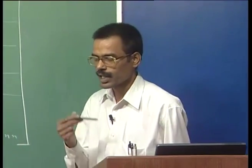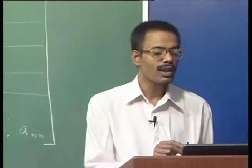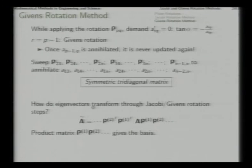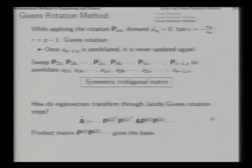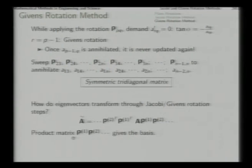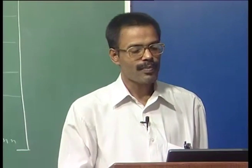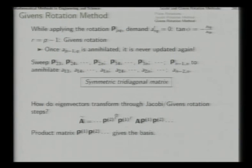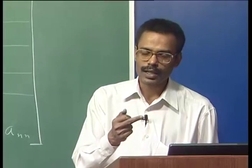With these Givens rotations P23, P24, etc. we make these zeros which will never be updated again. As we move to P34 through P3n and so on, all zeros are preserved by symmetry as well. At the end of a complete Givens rotation sweep — P23 to P2n, P34 to P3n, and finally P(n-1,n) — you get all these zeros because the old zeros are not updated. The result is a symmetric tri-diagonal matrix, and this sweep is applied only once.